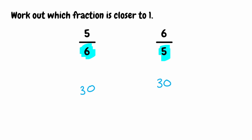We need equivalent fractions for both of these over 30. For the first fraction, the denominator is 6, so we must have done 6 multiplied by 5 to get 30. To keep the fraction equivalent, because we've multiplied the denominator by 5, we're also going to do that to the numerator. So 5 multiplied by 5 gives us 25. So 5 sixths is equivalent to 25 over 30.